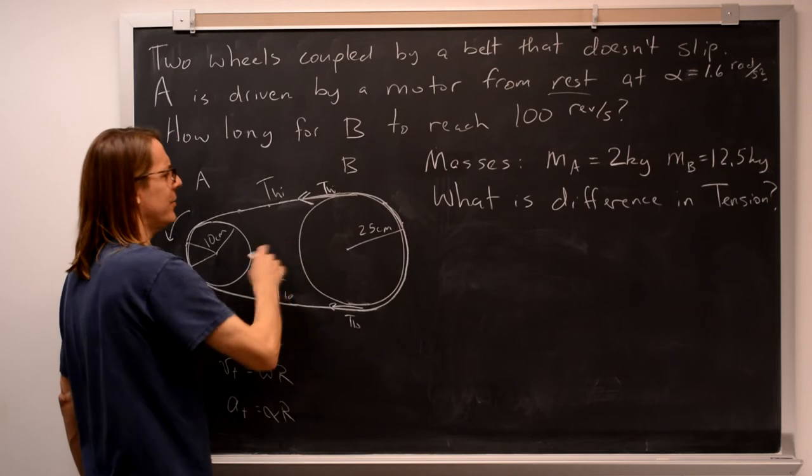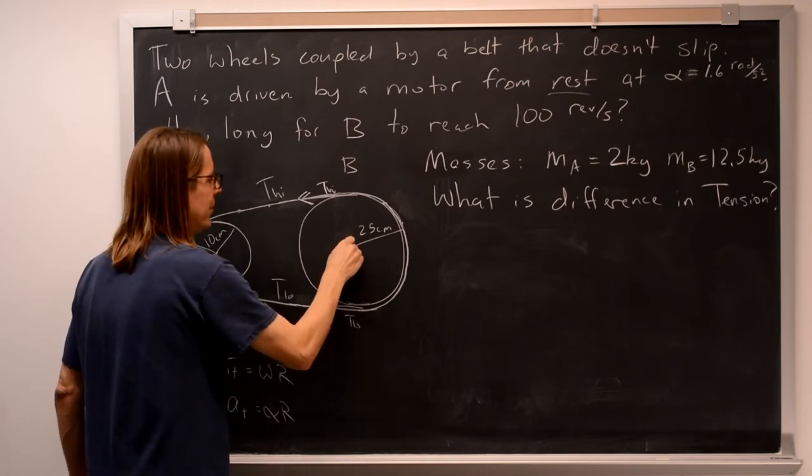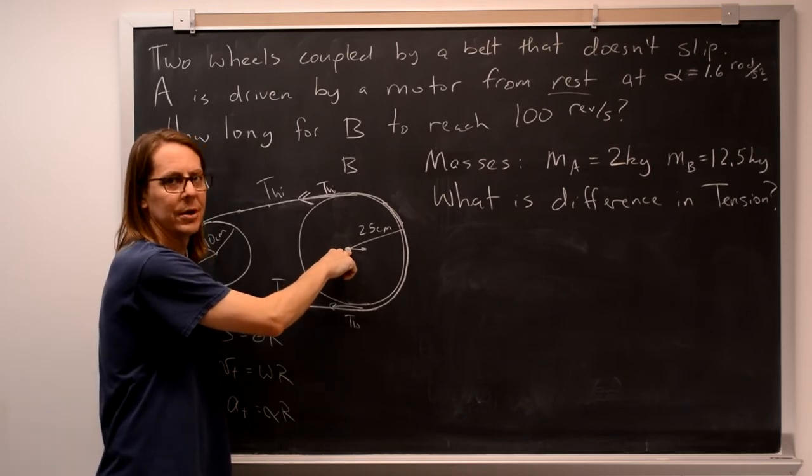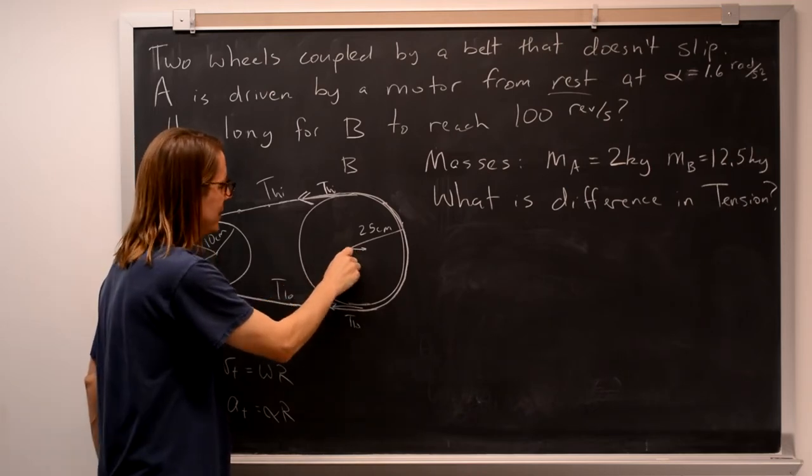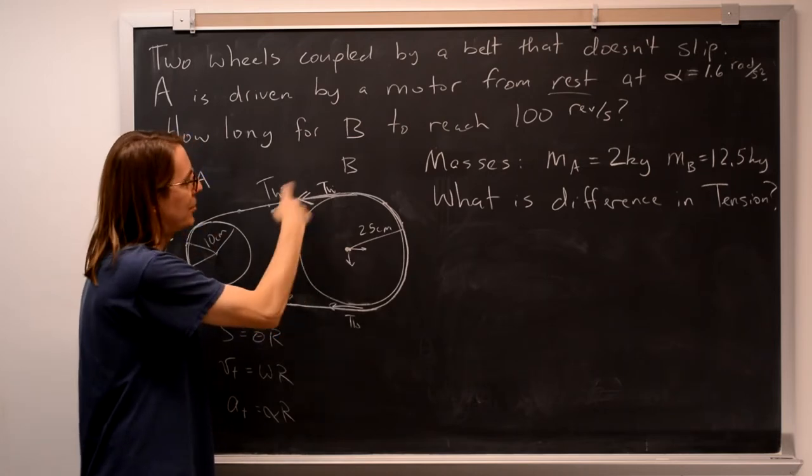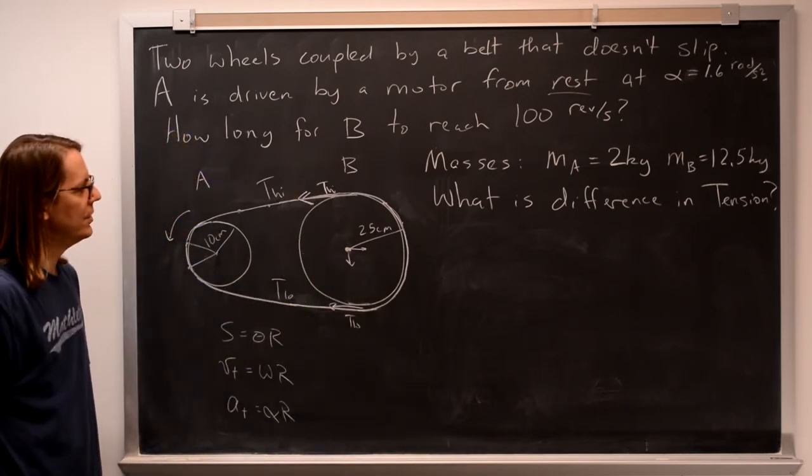And you could say, why isn't it accelerating? Well, there's a bearing here. But since that's the axis of rotation, that's not applying a torque. What about gravity? Well, gravity's acting at the center. It's on the axis of rotation. It's not applying a torque. So the only thing that applies a torque in this situation is the belt.